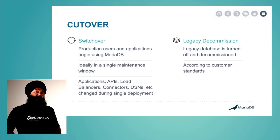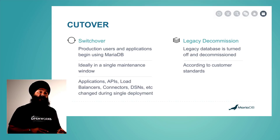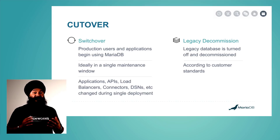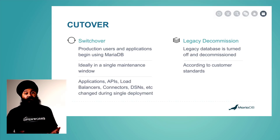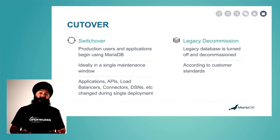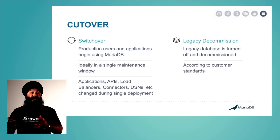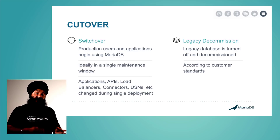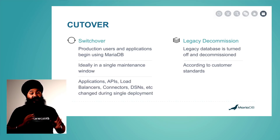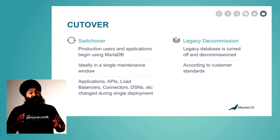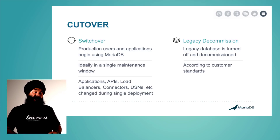The switchover is probably the most critical step. Production users and applications begin using MariaDB. Ideally, you want to do this in a single maintenance window or atomic operation. Your applications, APIs, load balancers, connectors, and DSNs are all changed in that single deployment step to connect to MariaDB. At this point, you should be in production with MariaDB and everything should be working well.